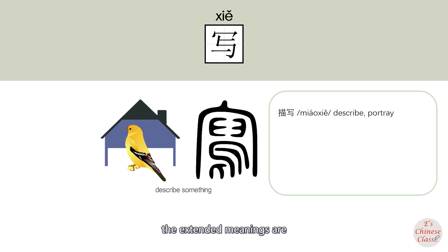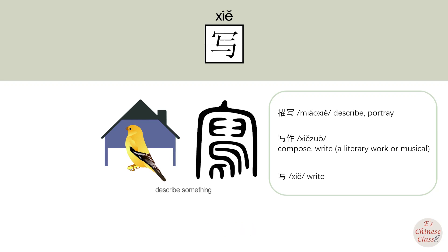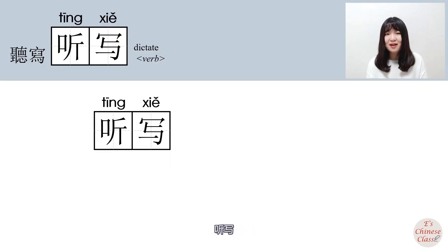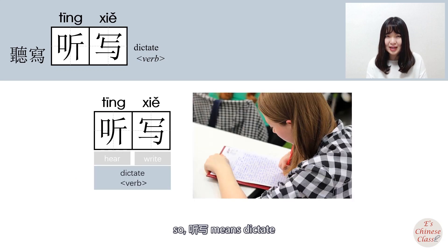The extended meanings of xiě are 'compose' and 'write,' as in xiě zuò. Tíng means 'hear' and xiě means 'write,' so tíng xiě means 'dictate.'